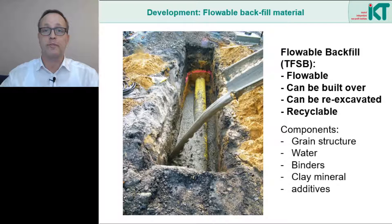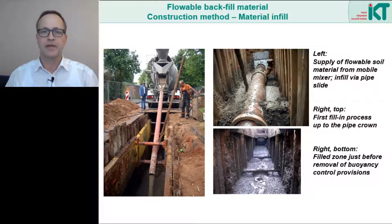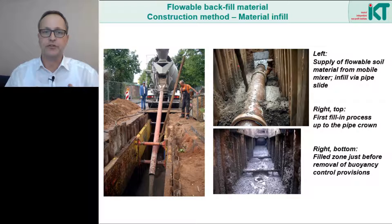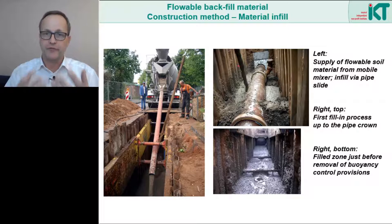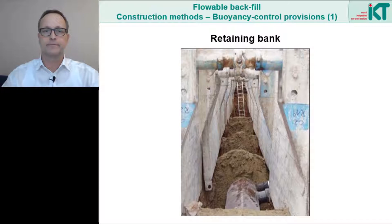Very often all this is also referred to as a recipe for flowable backfill. Here we see different installation phases. The material is delivered to the construction site in a truck mixer, for example, and then filled into the trench via a pipe extension. The drop height should not be greater than 1.5 meters to prevent segregation. The material then flows in the trench all around the pipe. To prevent the pipe from floating, it must be secured against buoyancy. After the material has begun to solidify, the buoyancy protection can be removed.